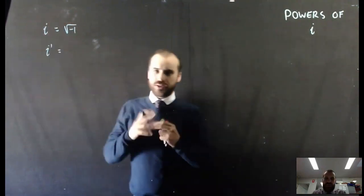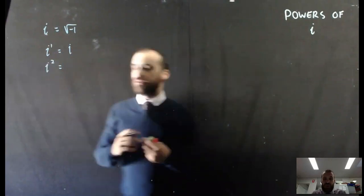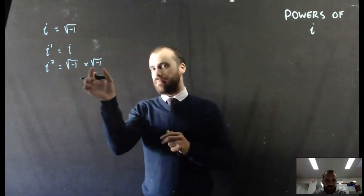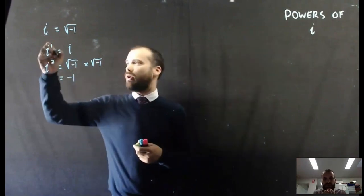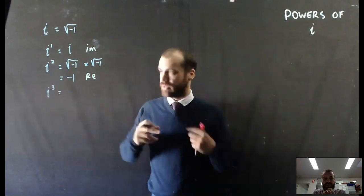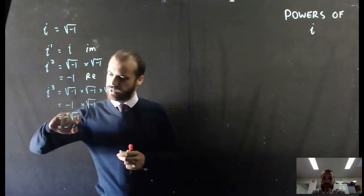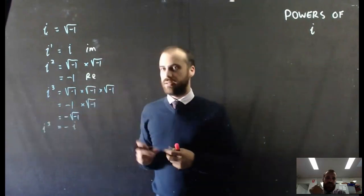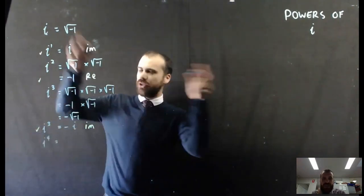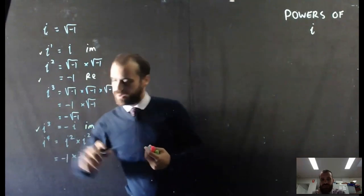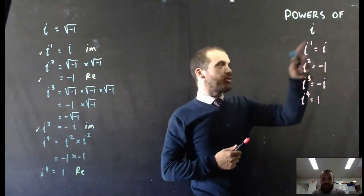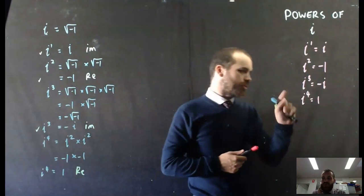Powers of i — this is a fun one. i equals root negative 1. i to the 1 is just i. i squared is root negative 1 times root negative 1, which gives us negative 1. i cubed is root negative 1 three times, which ends up being negative i. i to the 4 is i squared times i squared, which is negative 1 times negative 1, which is just 1. So we end up with this pattern: i to the 1 equals i, i squared equals negative 1, i cubed equals negative i, i to the 4 equals 1, and after that it starts repeating.